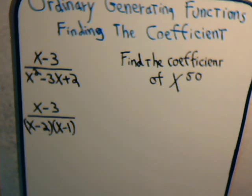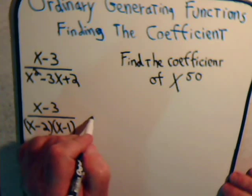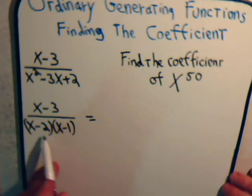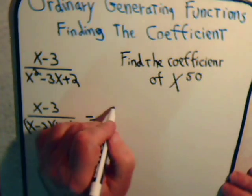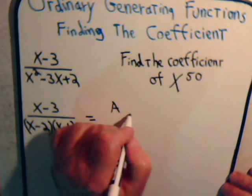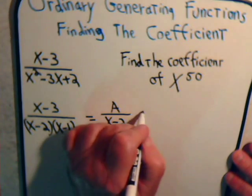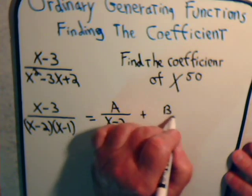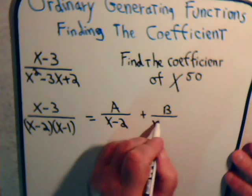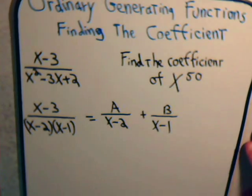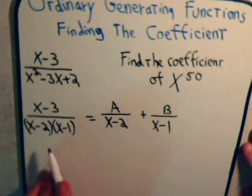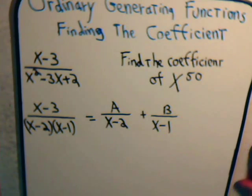Here, what we're going to do is, we're going to say this is equal to, these are both linear factors now, so it's equal to a over x minus 2, plus b divided by x minus 1. So we want to split this into two simpler expressions, and we have to determine what is a and what is b.